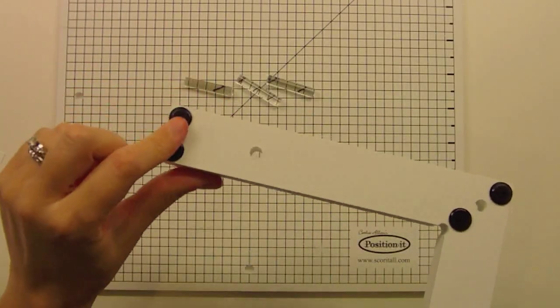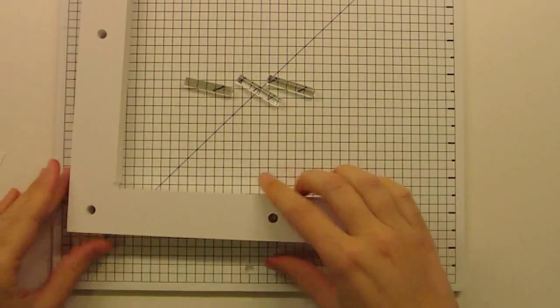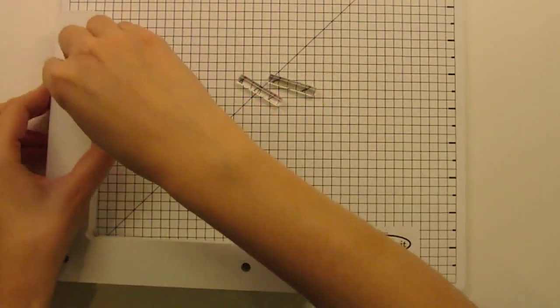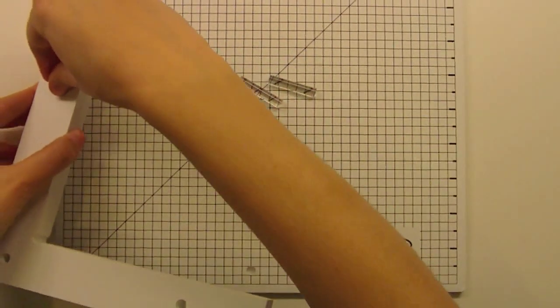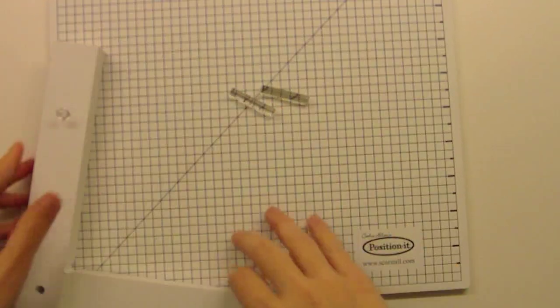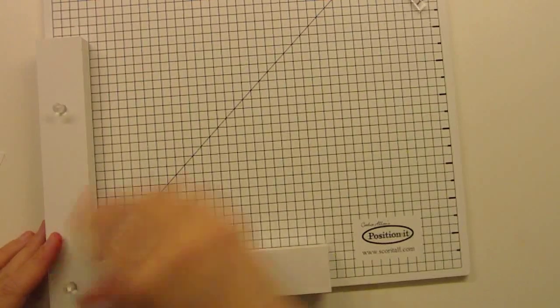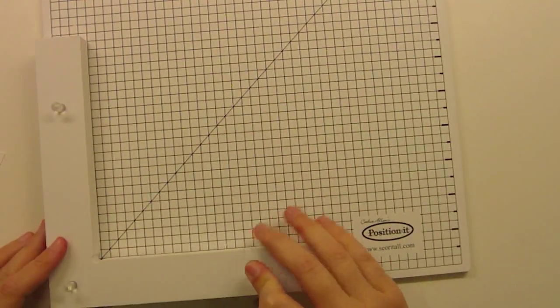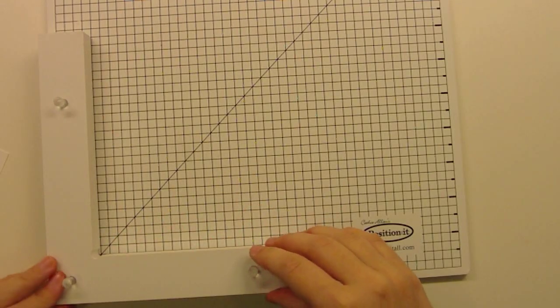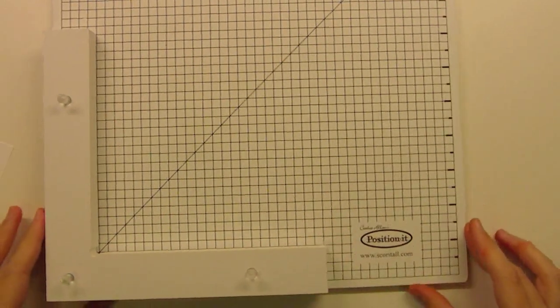Right now I'm just showing you the little grippy bottoms on the bottom of this positioner. It makes it so it doesn't slip, so you never have to worry about it coming off your paper. And then the other additional thing you can use are these little pegs that fit into the holes there and keep that right angle perfectly in place on your Position It grid mat, which I really love because it means that I don't have to worry about it moving all over the place.